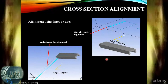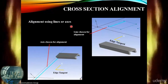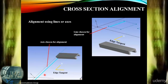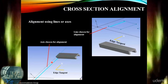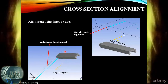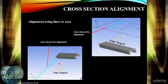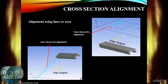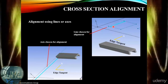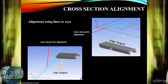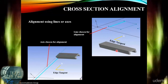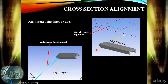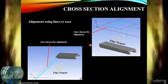We can also create the alignment using lines or axes. Here we can choose an axis for alignment in order to orient the cross-section correctly, and on the right-hand side a line is chosen for the alignment of the cross-section for the previous line body. These are just alternative ways of making sure that cross-sections are aligned correctly.